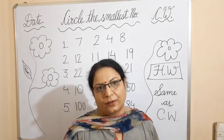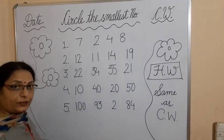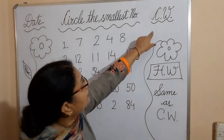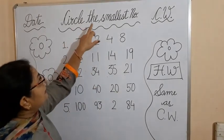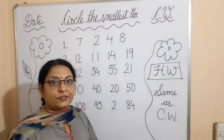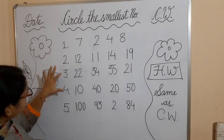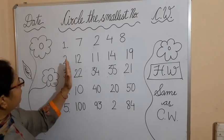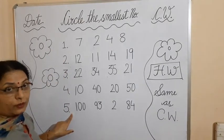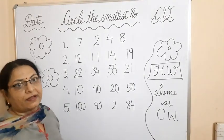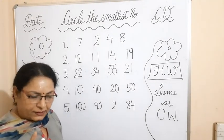Shall we start? I am going to give you some examples here. First of all, take out your notebook and write down the date, class work, and the heading of the topic. Our heading is 'Circle the Smallest Number,' which means we have to circle whichever number is the smallest. We are going to do five examples. Prepare your notebook properly because when I give you the internal assessment I will check your notebooks.